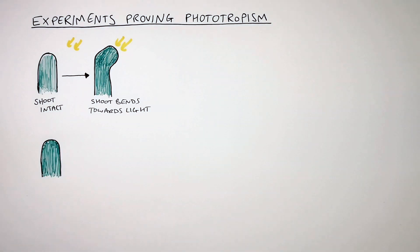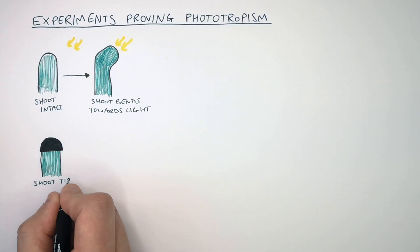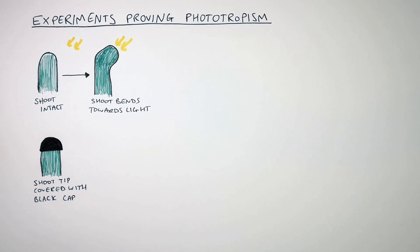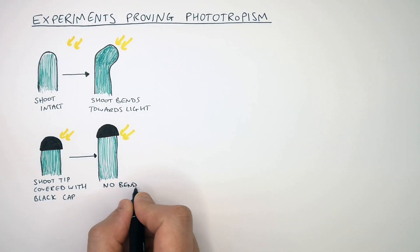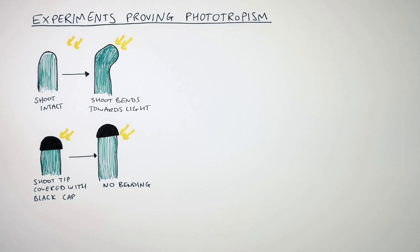However, in the next experiment, if you place a black opaque cap on the shoot tip and add a directional light source, the shoot will grow straight upwards — it will not bend towards the light. There is no bending because the auxins remain in the shoot tip. This is a shaded region and there is no elongation in either side of the shoot, so it grows upwards without any bending.